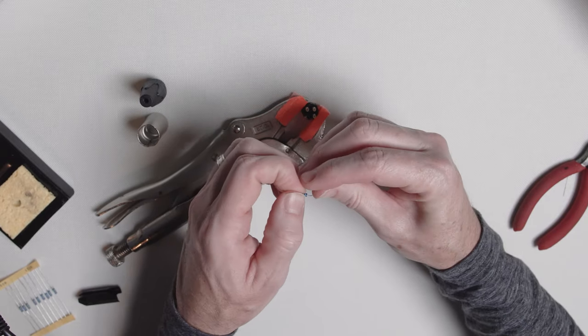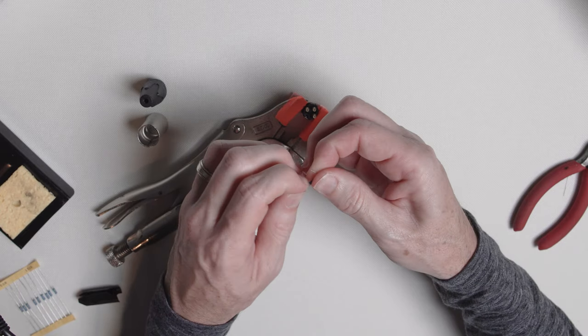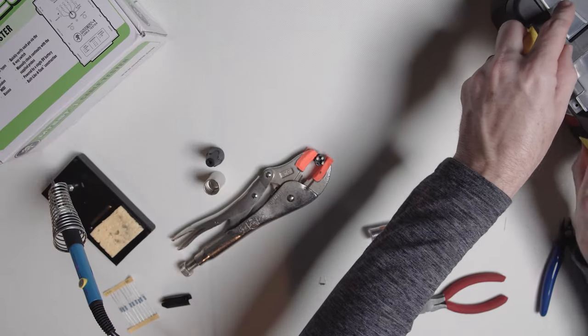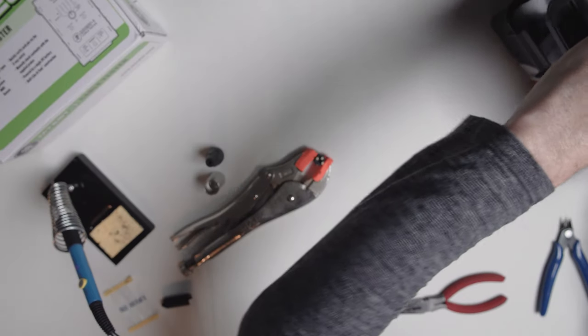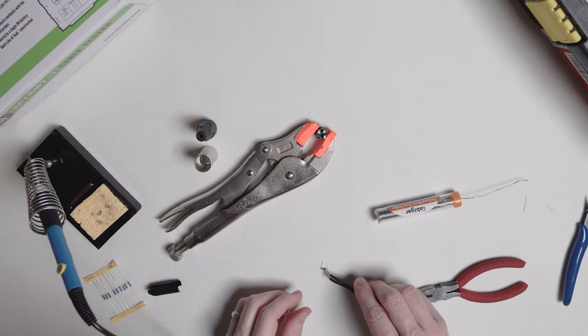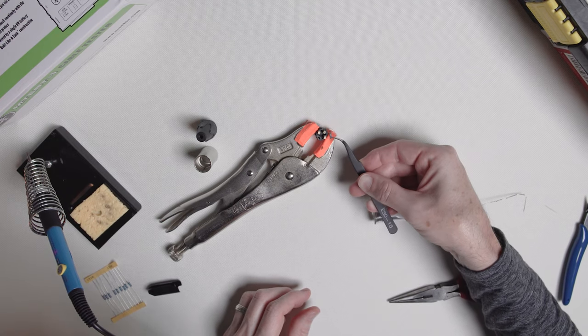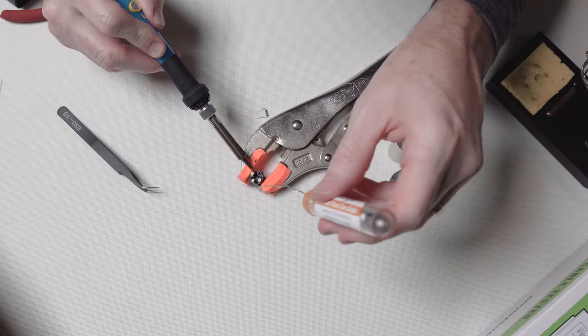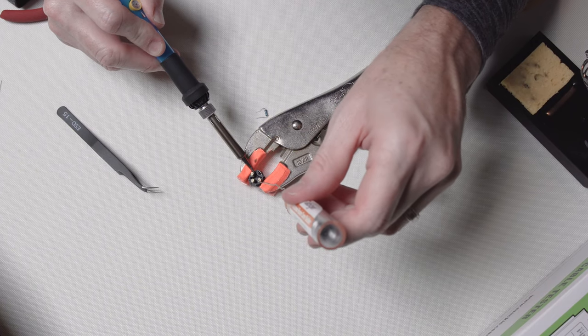And then I'm going to bend the resistor into this U shape so that each of the leads can go into their respective hole in the plug. Having a pair of tweezers helps so you can hold onto the resistor while you're working on it. And then go ahead, grab your soldering iron and we're going to heat up pin 2 on our plug.